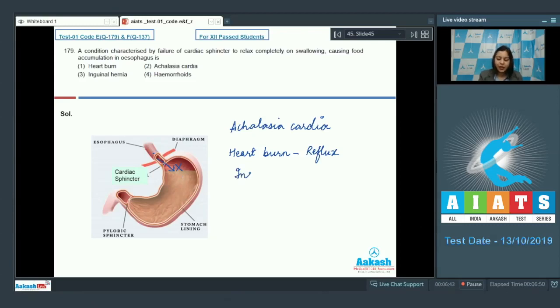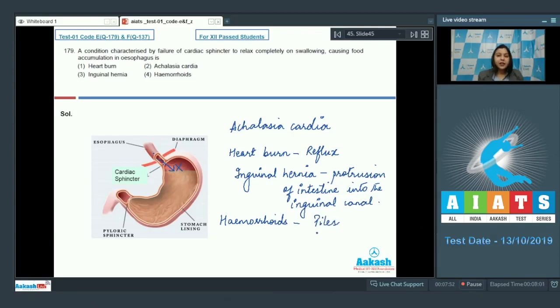Let us look at the third condition which is inguinal hernia. Inguinal hernia refers to the protrusion of intestine into the inguinal canal. Number 4 is hemorrhoids. Hemorrhoids also commonly known as piles is a condition in which the rectal veins are distended or are enlarged leading to varicosities. So in this case, the failure of cardiac sphincter to relax is related to achalasia cardia. So the answer to this question becomes option number 2.